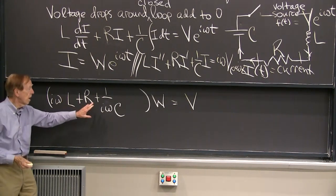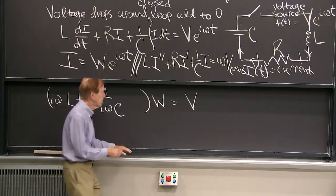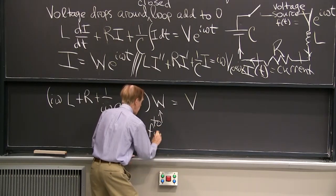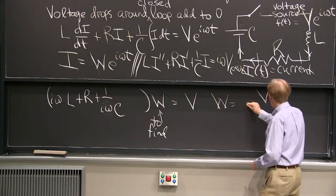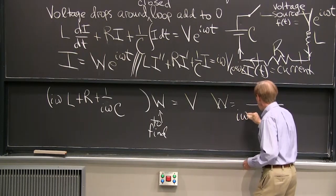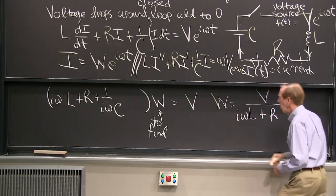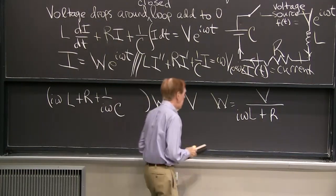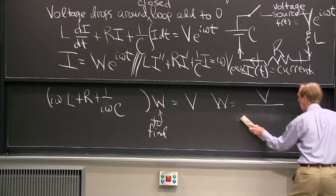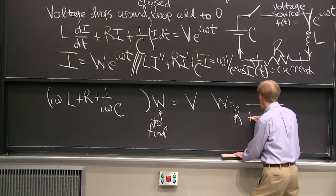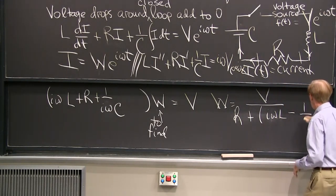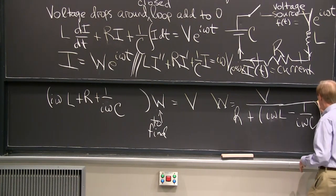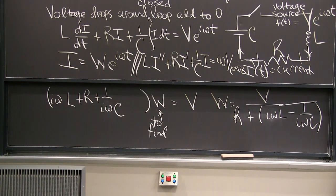Those are the three terms that come times w, the unknown. And of course, we find it right away. We find w is V over, and now we're seeing this iωL plus R. Let me combine the iωs, combine the real part and the imaginary part. The real part is R, and the imaginary part is iωL minus 1 over iωC. Straightforward.